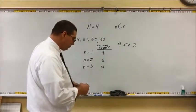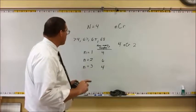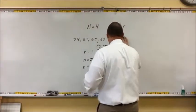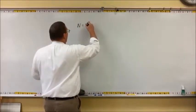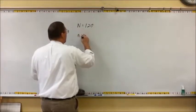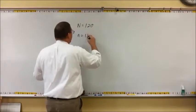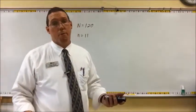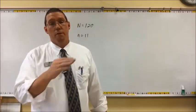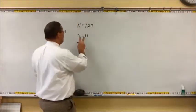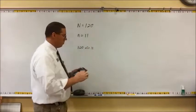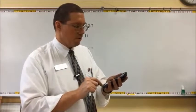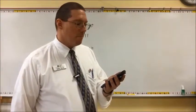Now let's say we have a population of 120 deer and we want to take a sample of 11. How many possible samples could we have? We need to calculate 120 nCr 11. On the calculator, I type 120, hit PRB, choose nCr, put in 11, and press Enter. It's a big number — it says 1.160681786 times 10 to the 15th power.